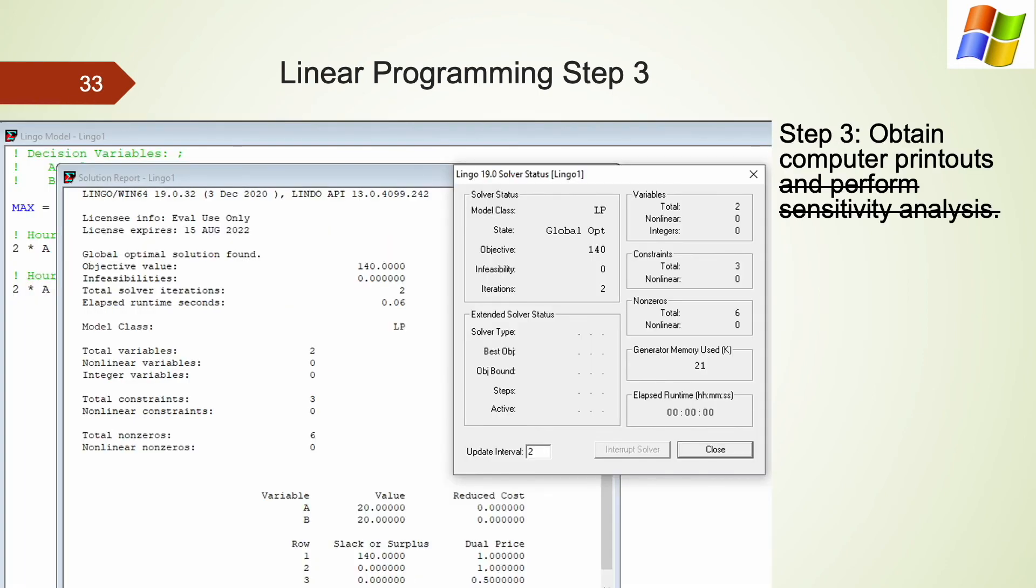In step 3, we obtain computer printouts. We will not discuss the sensitivity analysis for the scope of this class. After clicking on the target icon, two additional windows should appear. One of them is called solver status, which summarizes the optimization problem and presents the status of optimization. For example, for our problem, the class of this model is LP, which stands for linear programming. There are two variables and three constraints. This is because the objective function is also counted as a constraint by Lingo. Our example is very simple to optimize. It took 0 seconds for Lingo to complete and only two iterations. The optimal value of the objective function is 140.